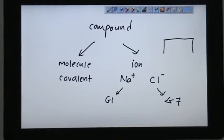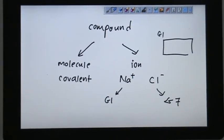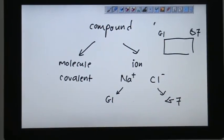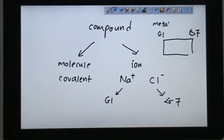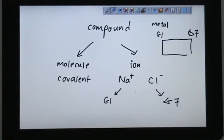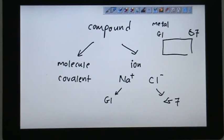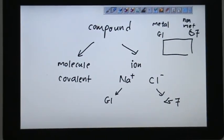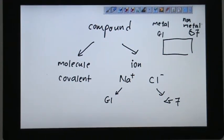If you have periodic table, Group 1 is generally here and Group 7 is somewhere here. So, most of the time we consider metal to be donating electron. And we consider non-metal to be accepting electron.